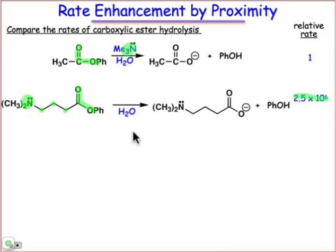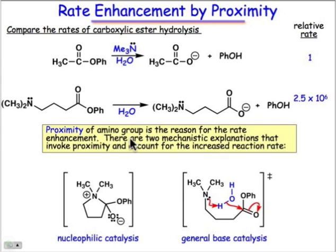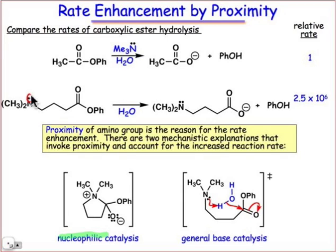How is it that this trialkyl amino group catalyzes the reaction, and what's the effect of tethering that group to the carbonyl? We could imagine one of two possible reaction pathways. It could be a nucleophilic catalyst. In the case of the second reaction, we're going to benefit from the close proximity of that nucleophile to the carbonyl to make this intermediate shown here.